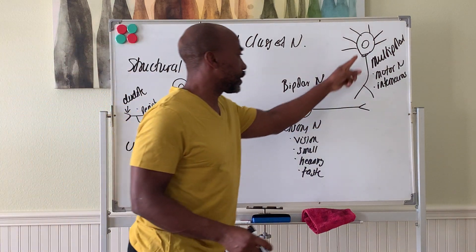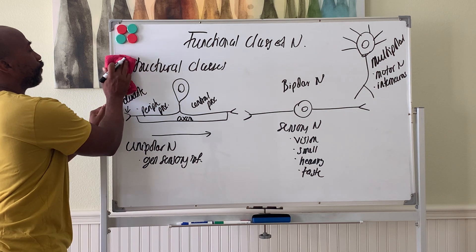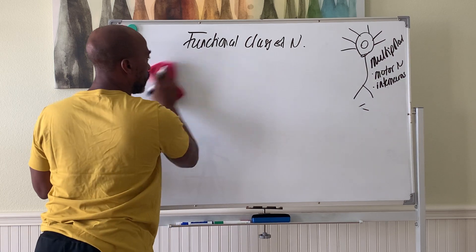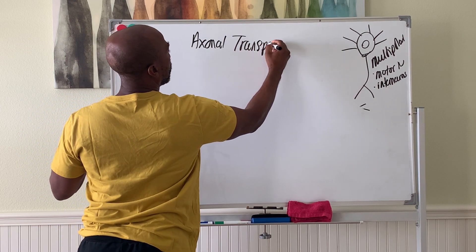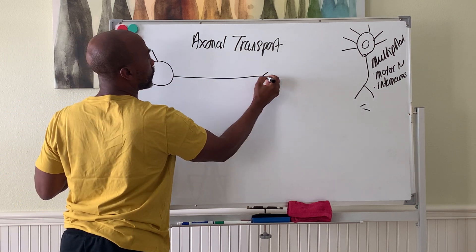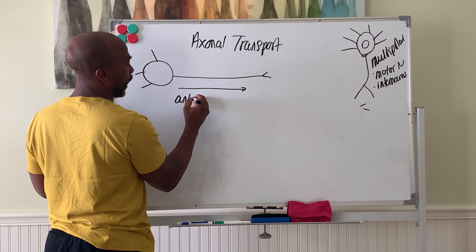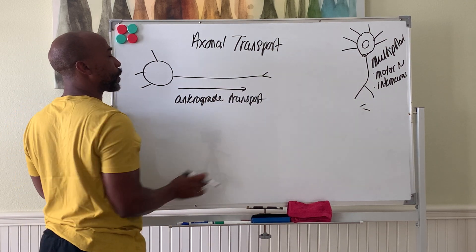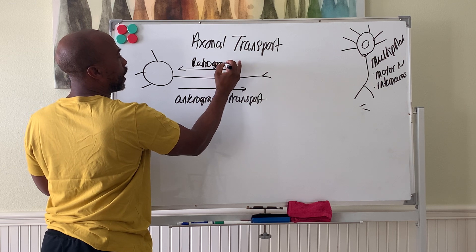These long axons that neurons have — things must be transported along them as well, within them. So there are two forms of axonal transport. When things travel down the axon from the soma toward the axon terminal, we call that anterograde transport. When things travel the reverse way — back up — we call that retrograde transport.